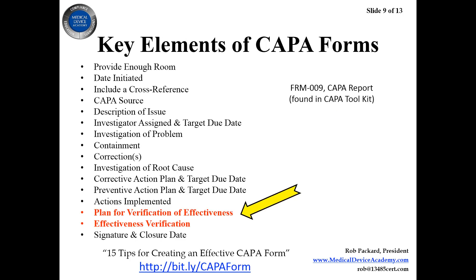Slide nine covers all the key elements of a CAPA form, with a link to an article I wrote on how to create an effective CAPA form. On the right-hand side I reference Form 009 — a template I created for a CAPA. If you order my full CAPA course webinar, you get the slide deck, the recording, the CAPA form, the CAPA procedure, and a work instruction on how to analyze risks using a risk-based approach. In the form, the verification of effectiveness section has two parts: the plan for verification of effectiveness — which I try to complete first — and then after completing the check, the effectiveness verification section, with a signature and date at the end.